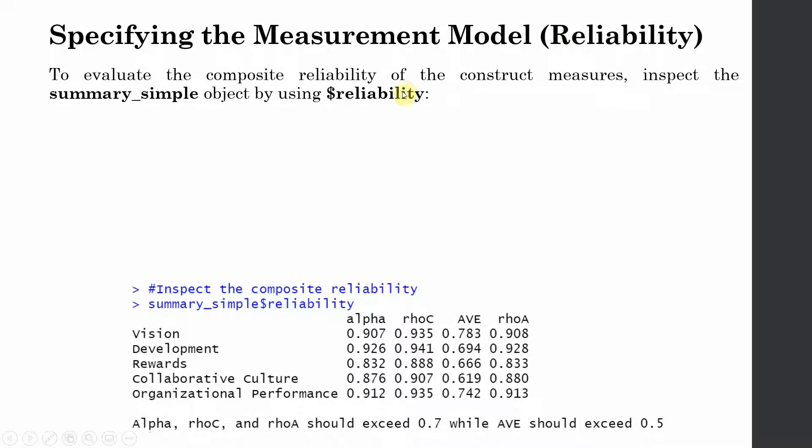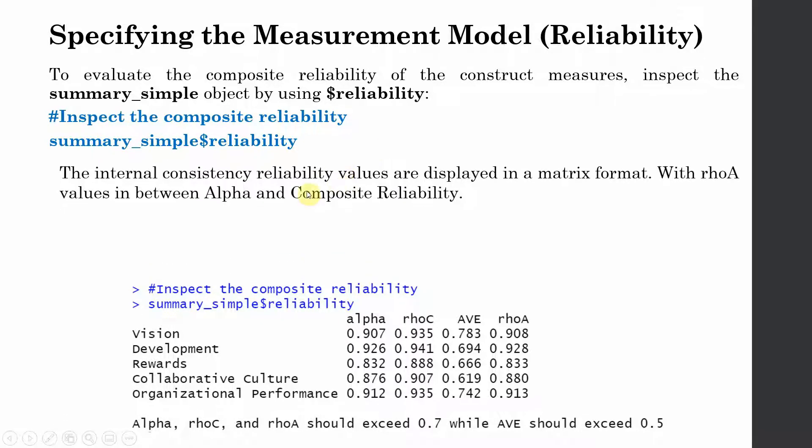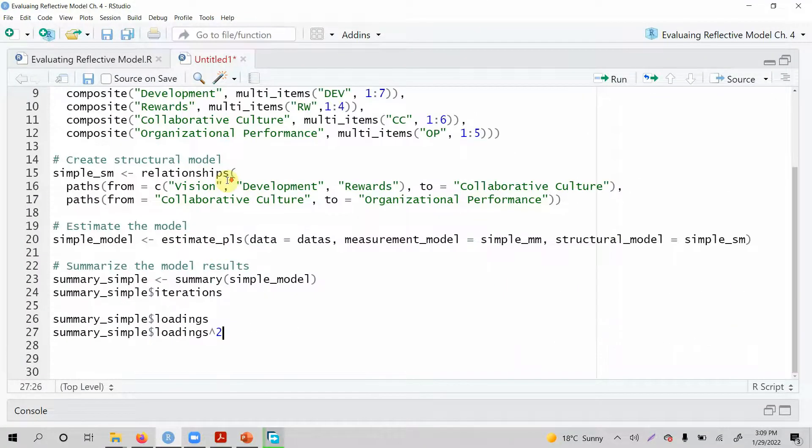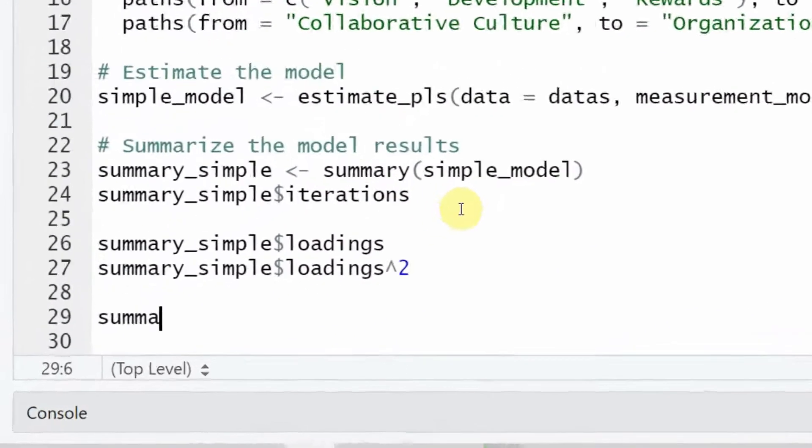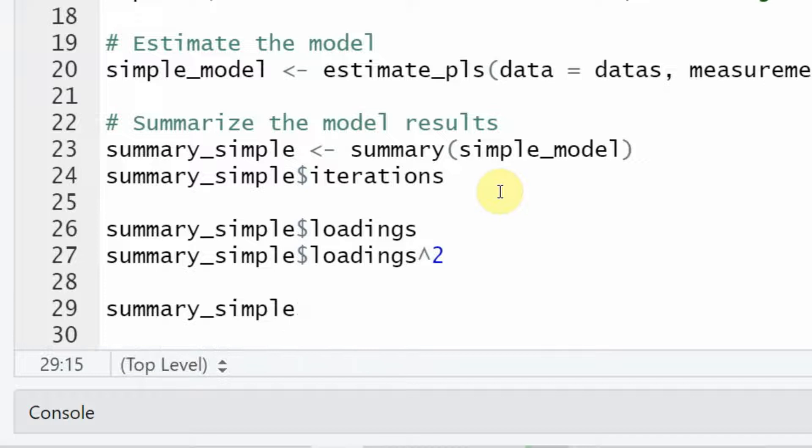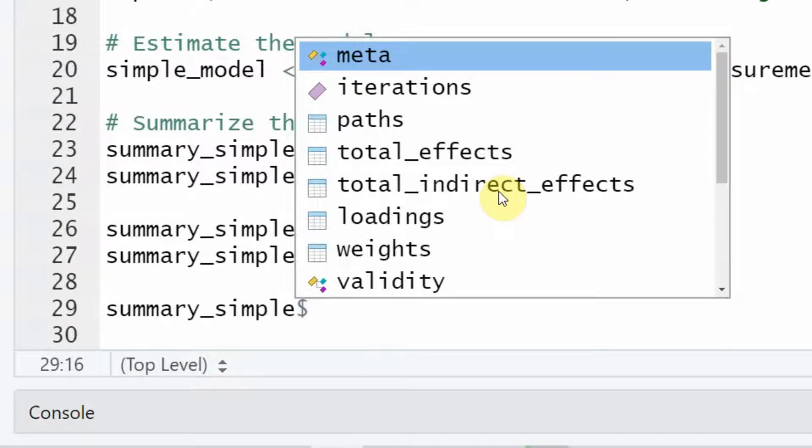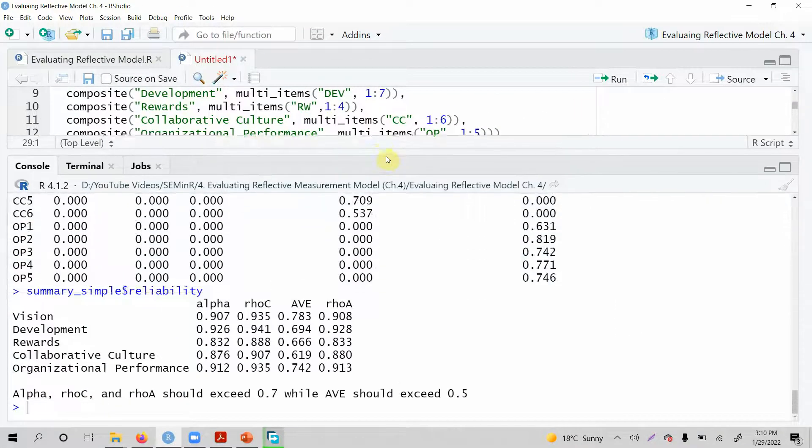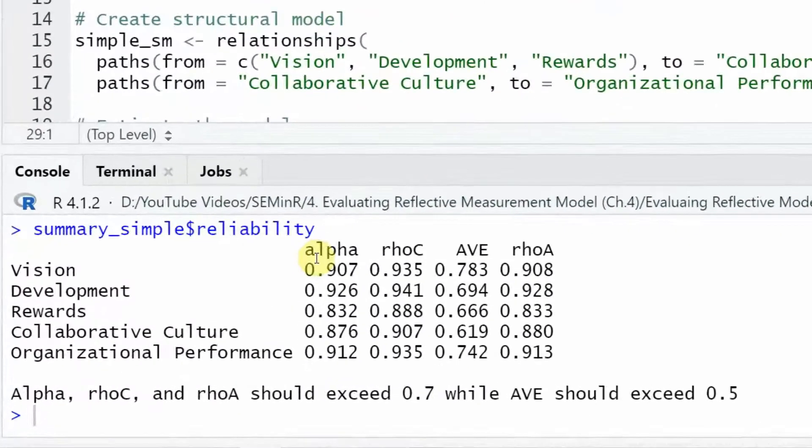Now how do we check for reliability? We have already specified a measurement model and estimated our measurement model. Now how do we take out reliability from that particular model? We have already summarized the model in this particular object. So you simply type in this in your R program. Let's first have a look how to do it. Let's go back here. We have already done this in the previous session. So I'm going to continue. Let's do summary underscore simple and then the dollar sign. And what do I want? I want reliability. Here it is. Selected. Now here is your output. Have a look here.